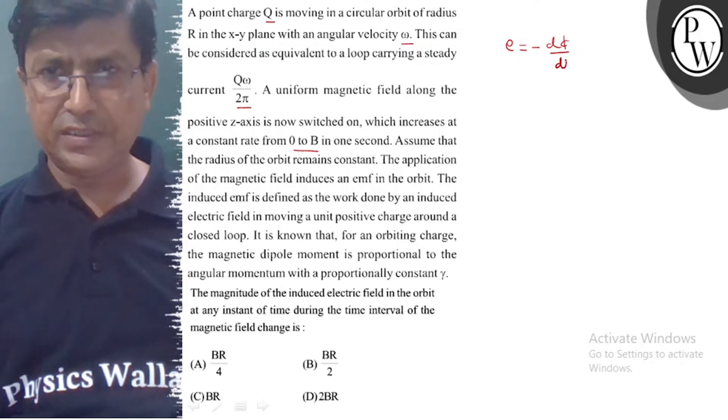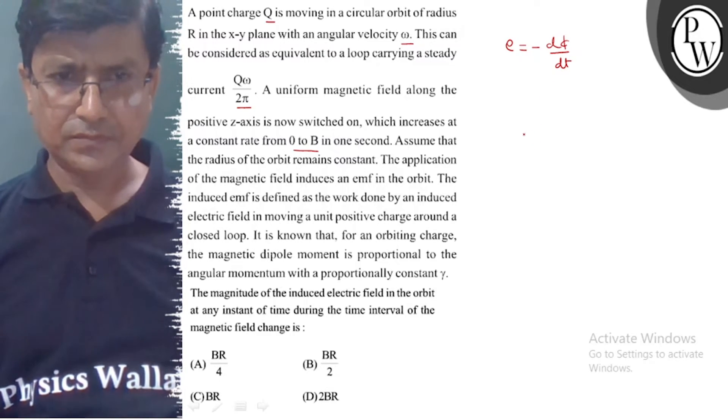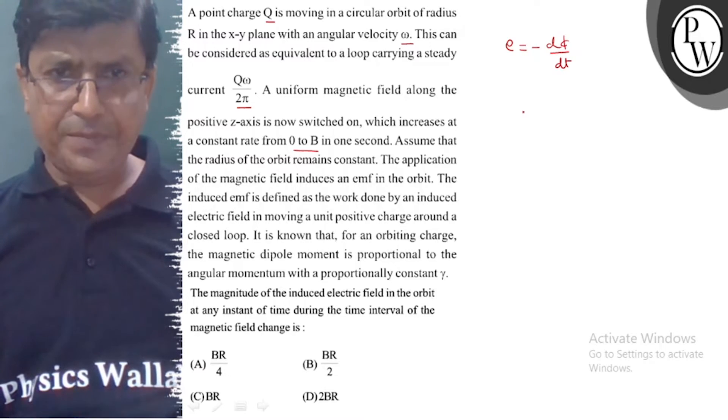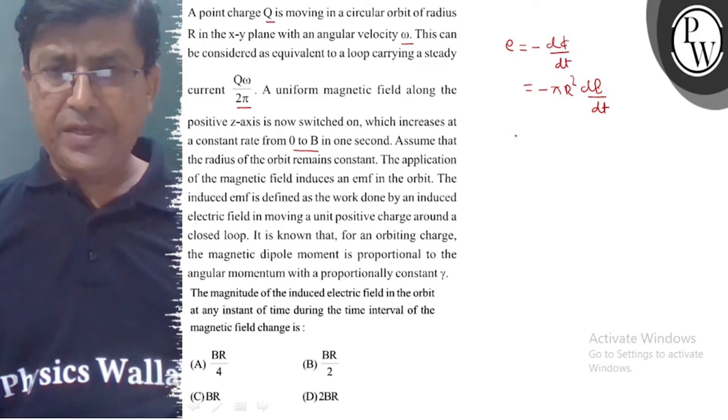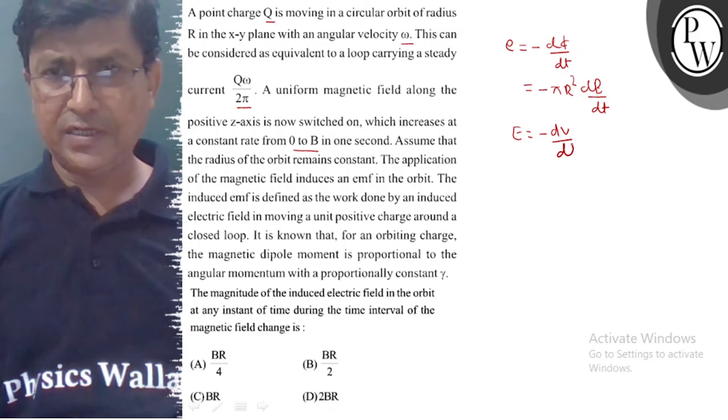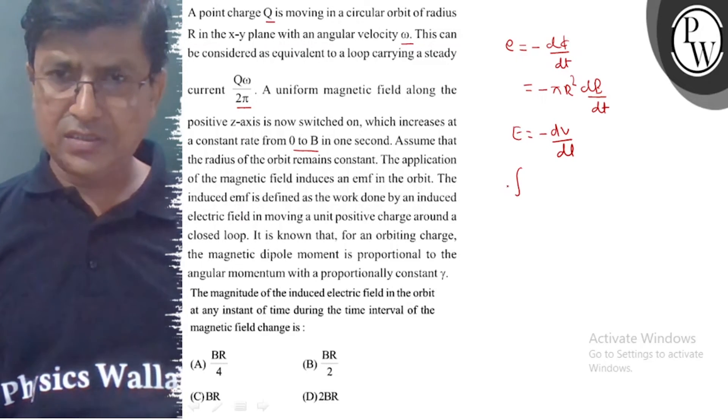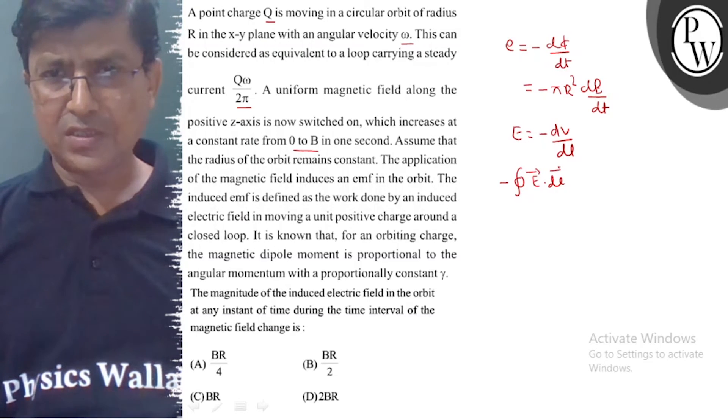And then we know that EMF equals -dΦ/dt. The electric field is equal to -dV/dl, or here we can write -∫E·dl is equal to dV.